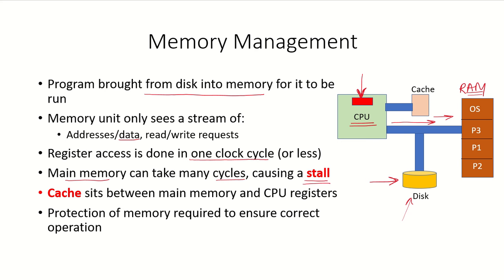Instead of using the main memory, which requires a longer access time, there is a cache, which is a high-speed memory that sits between the main memory and the CPU registers. For quick and easy access, some data can be transferred from the RAM to the cache, and then the CPU can quickly access the cache for instructions and data.